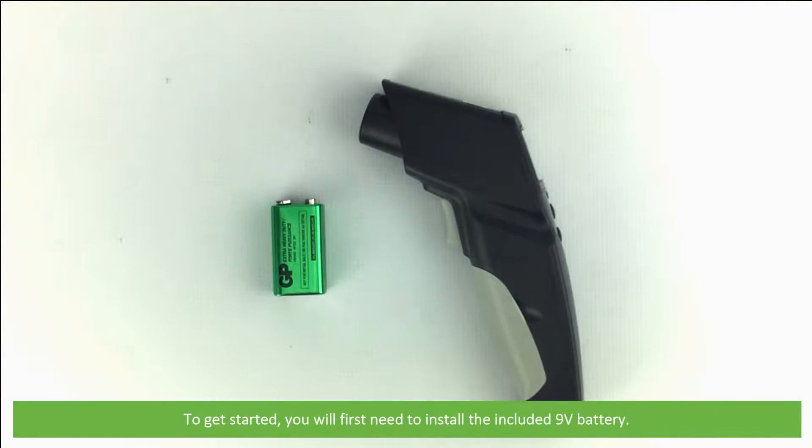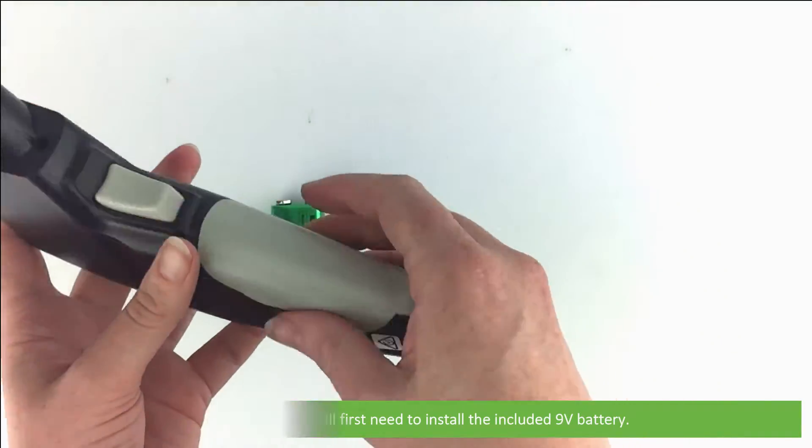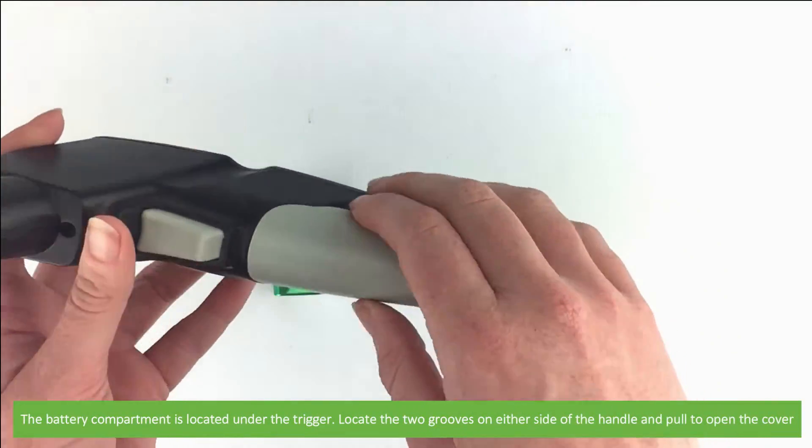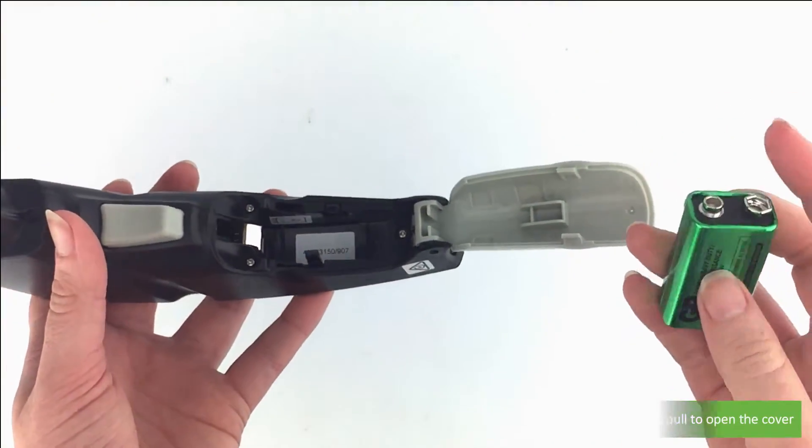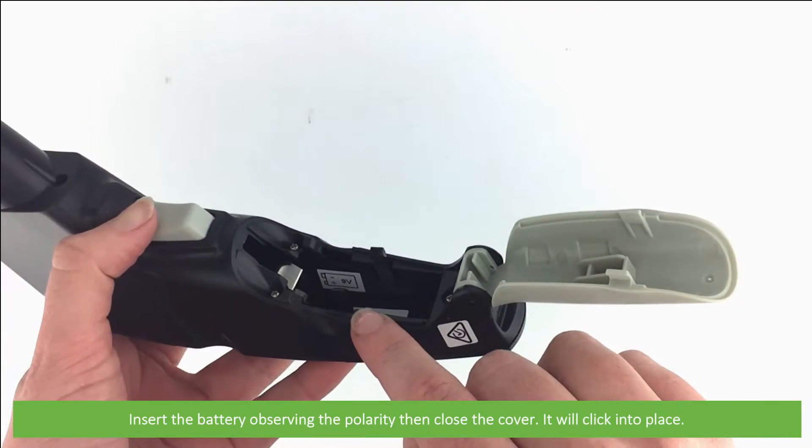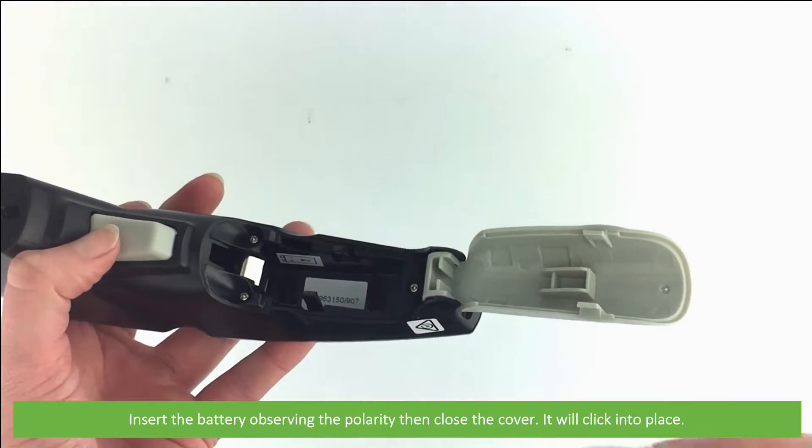To get started you'll first need to install the 9 volt battery. The battery compartment is located under the trigger. Locate the two grooves on either side of the handle and pull to open the cover. Insert the battery observing the polarity then close the cover. It will click into place.